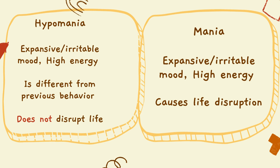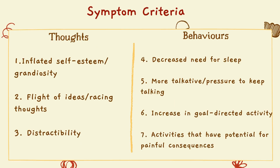Looking at the differences: in hypomania, the person has irritable mood, high energy, and behavior very different from before, however it does not disrupt their life. For mania, they have expansive mood, irritable mood, and high energy, and this increased activity causes disruption in their life.